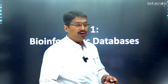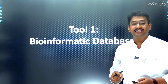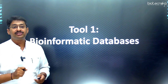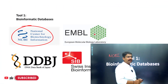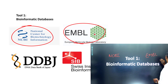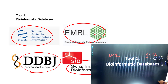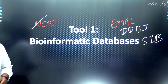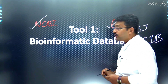The first tool used in bioinformatics is the database itself. In bioinformatic databases we are looking at publicly available databases. There are four major types: the first is NCBI, the second is EMBL, the third is DDBJ, and the fourth is SIB. NCBI is a US database — NCBI stands for National Center for Biotechnology Information, and EMBL is a European database standing for European Molecular Biology Laboratory.